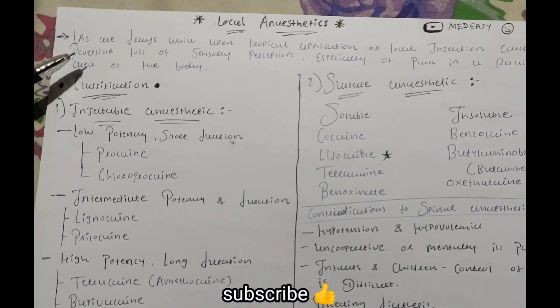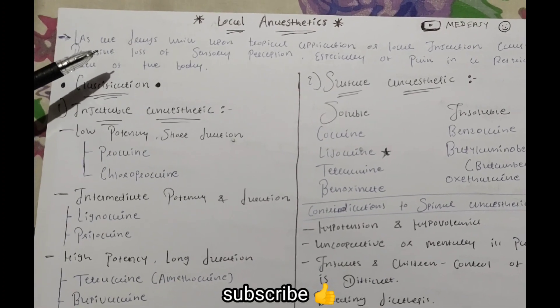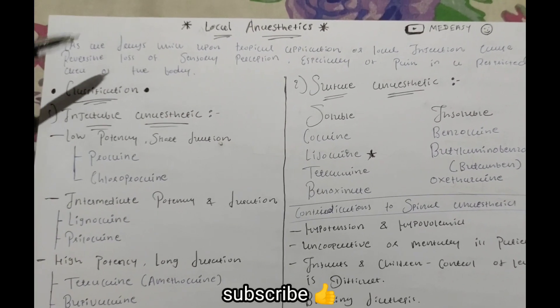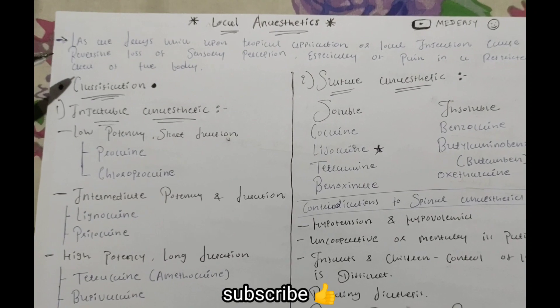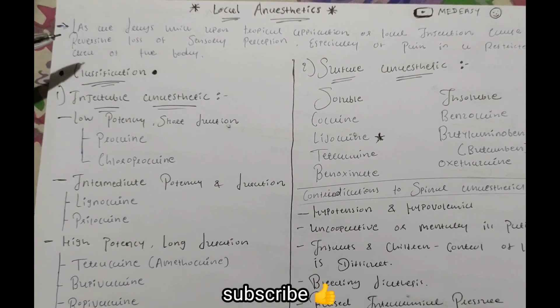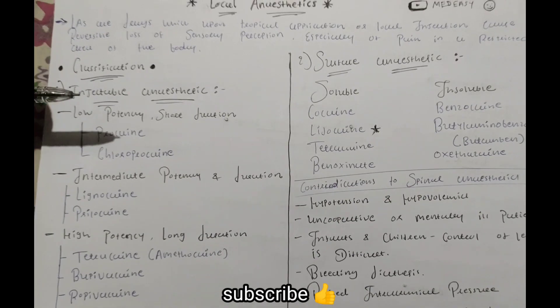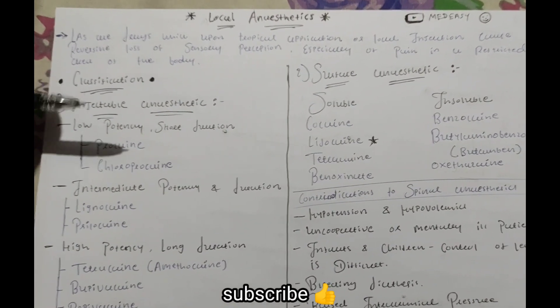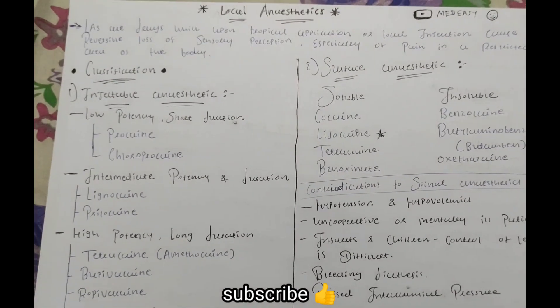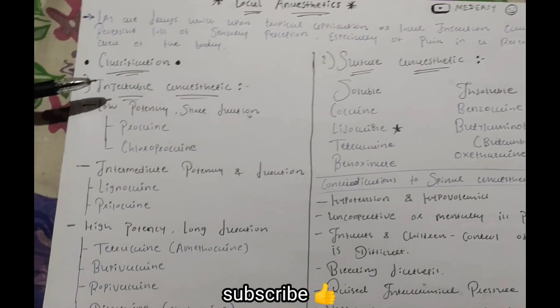Definition of local anesthesia: a drug which acts upon topical application or local injection causing the reversible loss of sensory perception, especially of pain, in a restricted area of the body. Local anesthesia blocks sensory nerves so we don't feel the sense in that part of the body, allowing us to do operations.